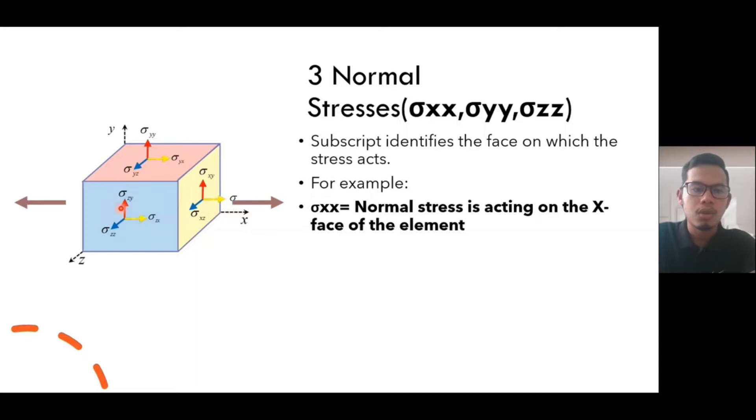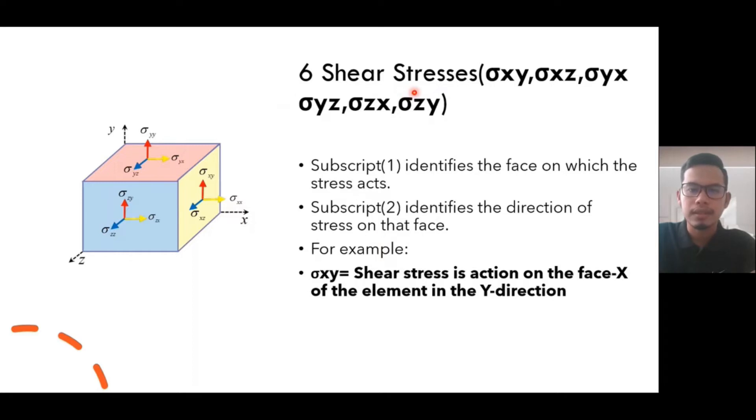For six shear stresses, subscript 1 identifies the face, subscript 2 identifies the direction. So x is our subscript 1, y is our subscript 2. For example, σxy shear stress is acting on the face x and in the y direction. So here is our face x and here is our y direction, so the direction should be like this.